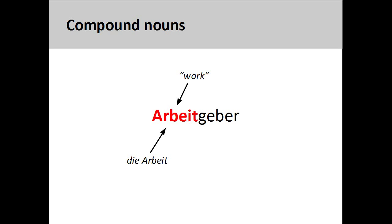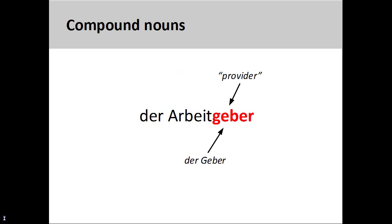The first noun in our compound noun is die Arbeit, a feminine noun meaning work. The second noun is der Geber, a masculine noun meaning giver or provider. This noun is derived from the verb geben, to give.